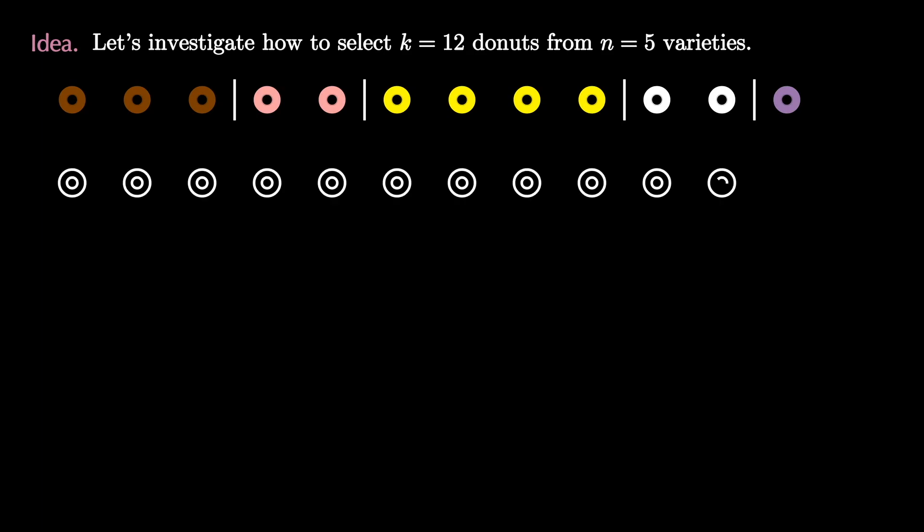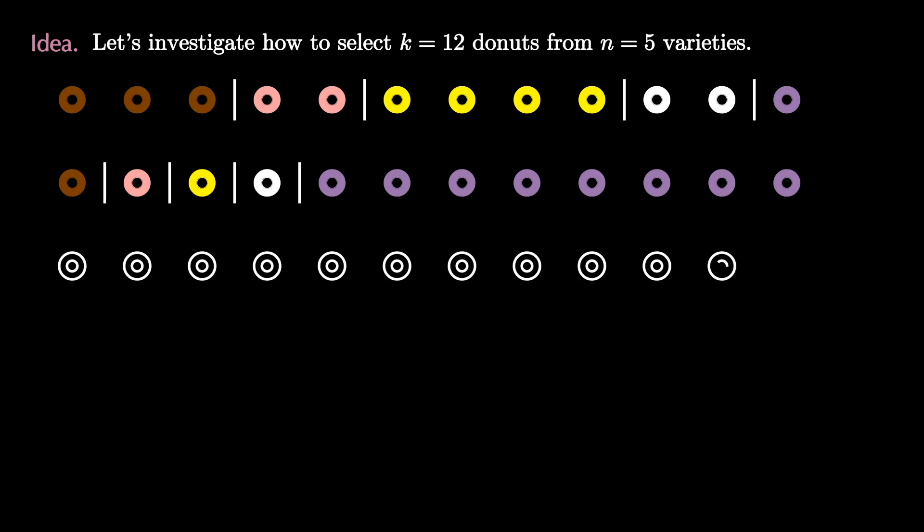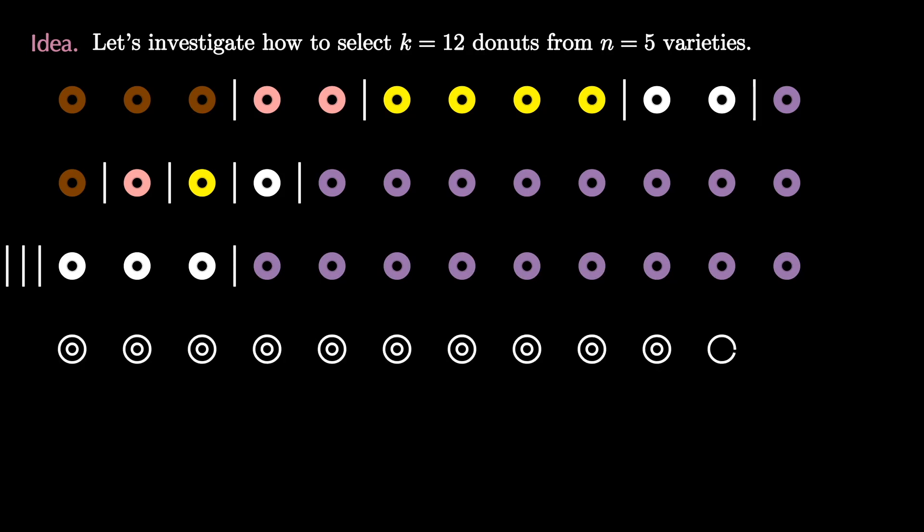Let's see another example where we think of 12 plain donuts, place our four dividers, and then fill in based on the categories that they live in. We could imagine that we even have three dividers all the way to the left and one divider in the middle and that produces two types of donuts, vanilla and blueberry. Or we could place all of the dividers to the right side and that corresponds to having 12 chocolate donuts like this.